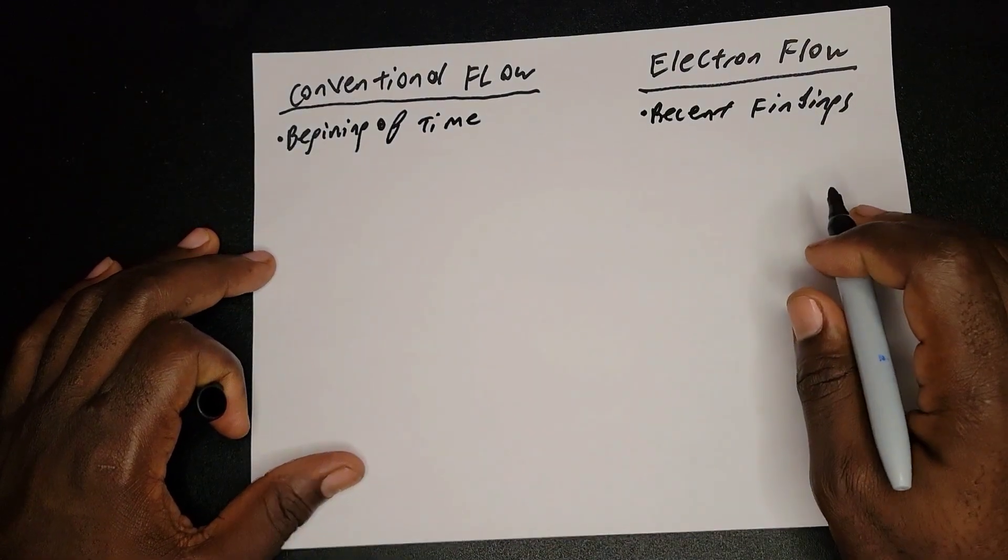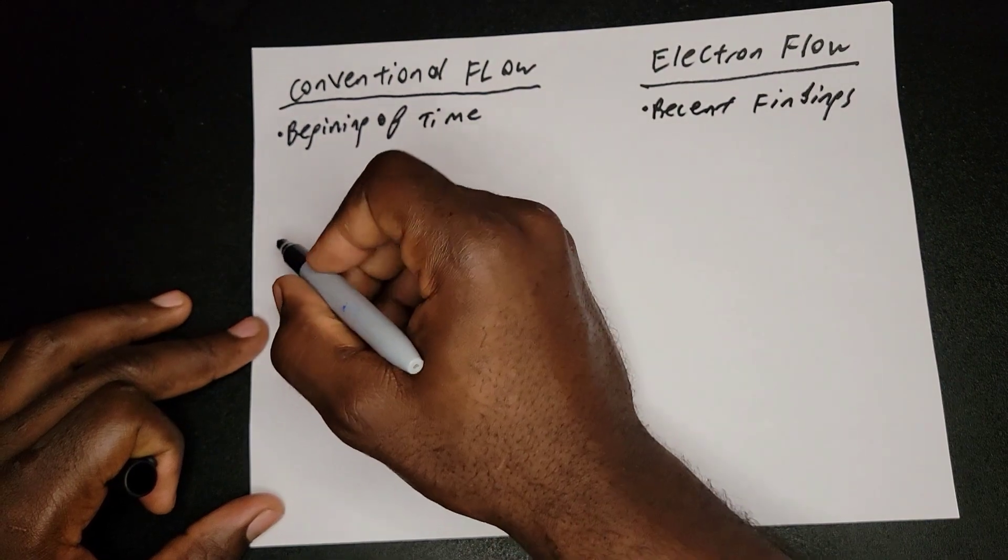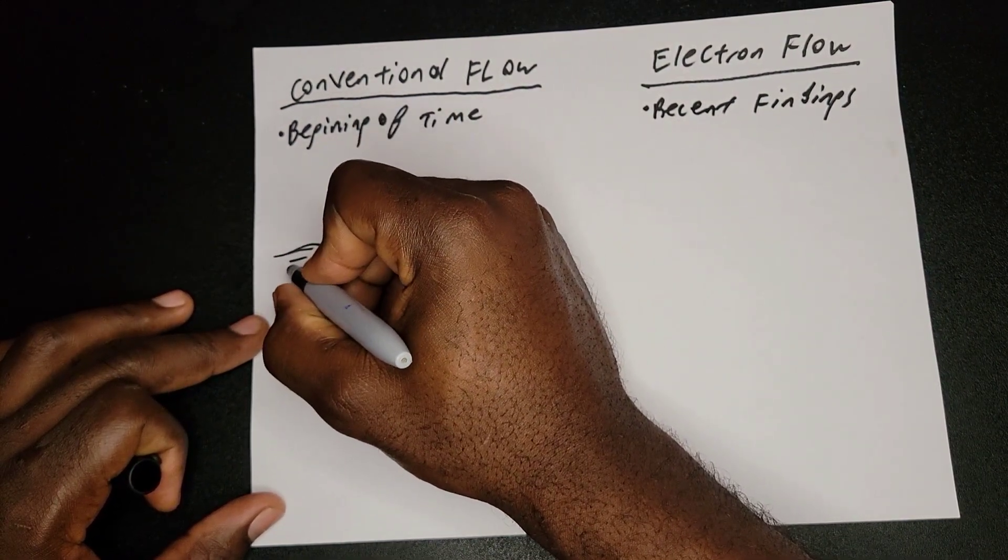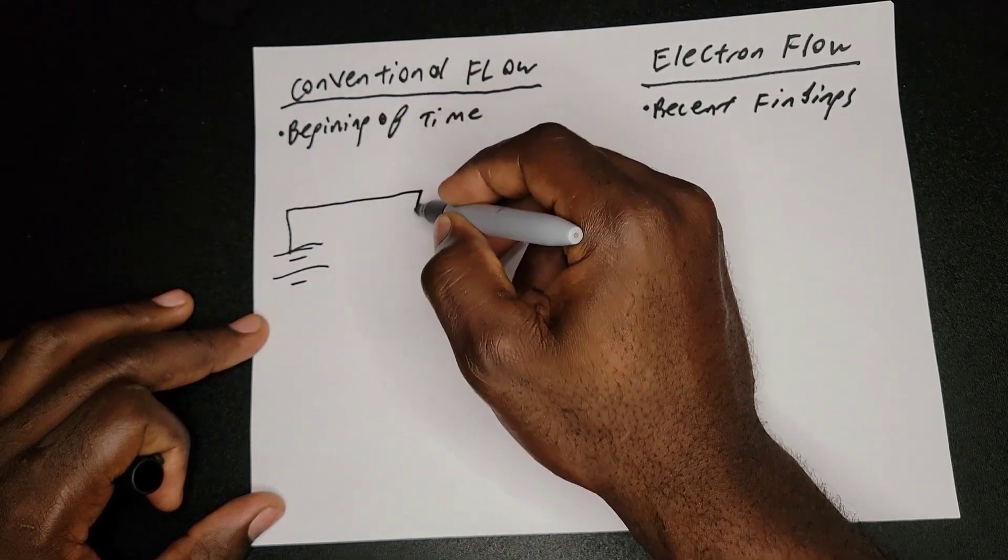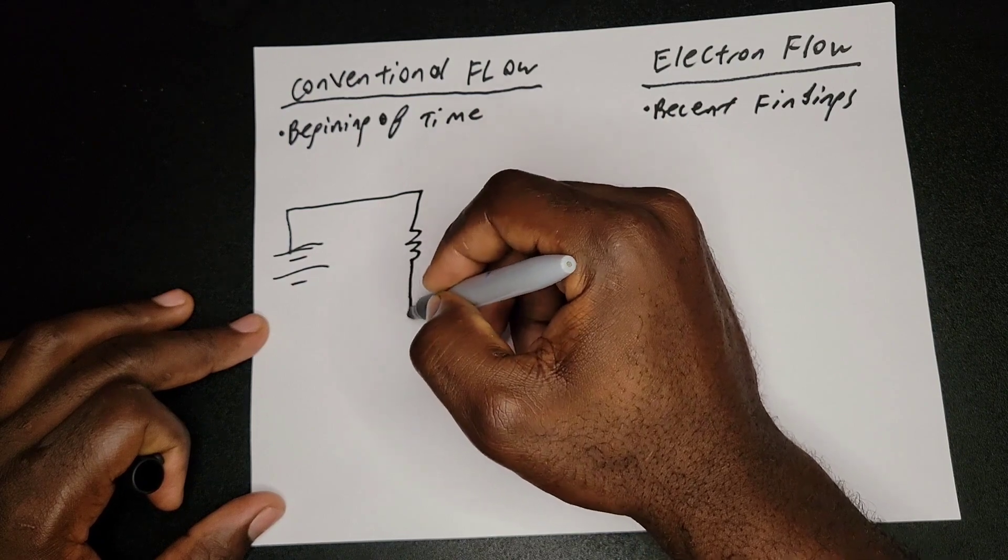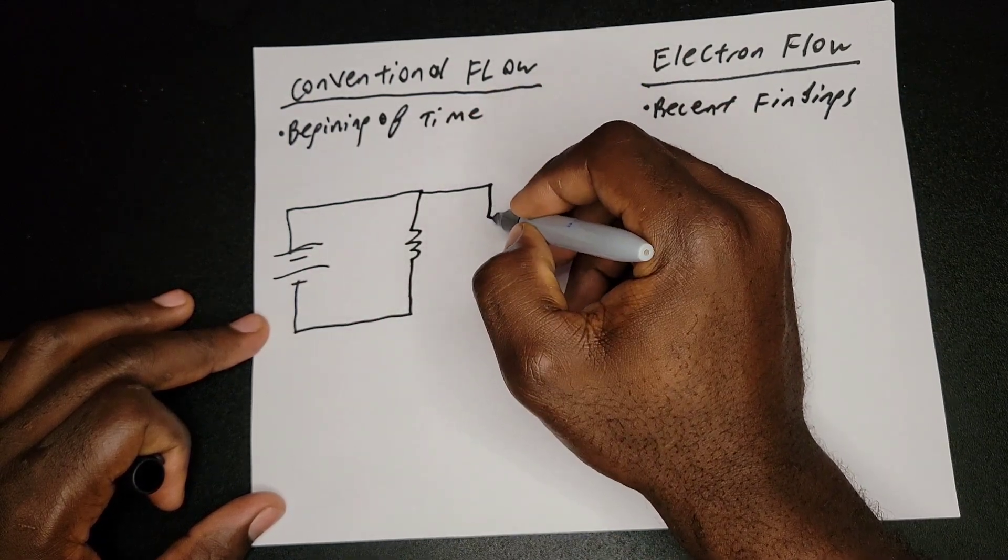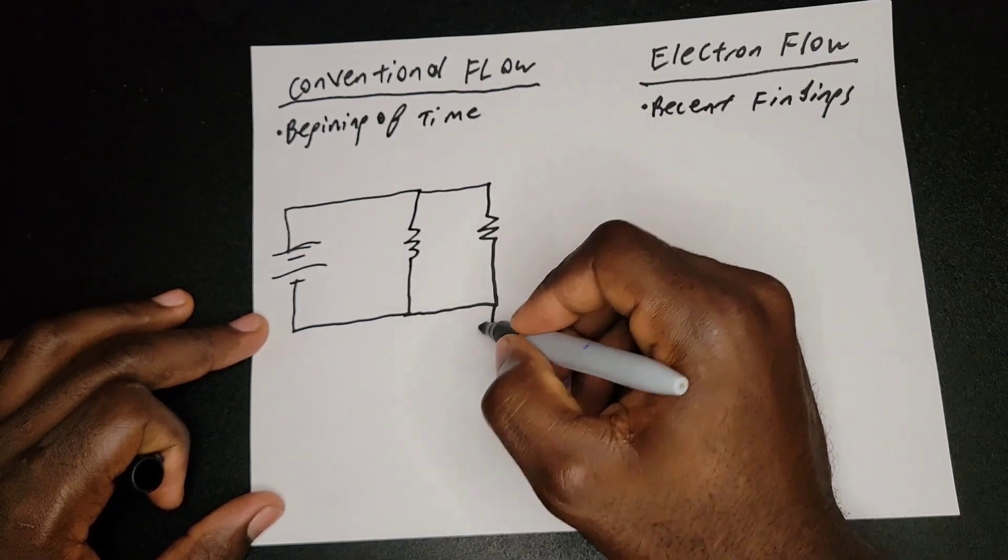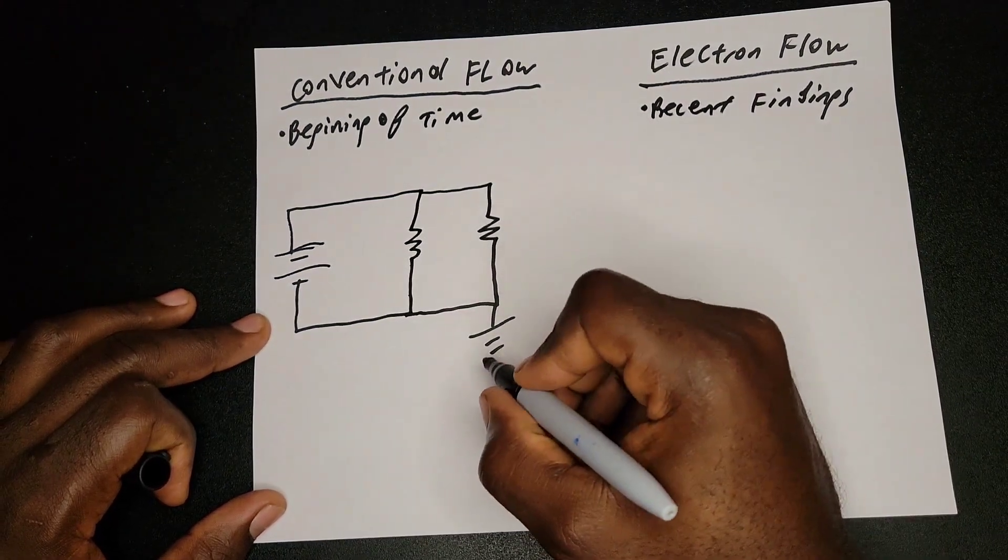So what does conventional flow state? This is my simple circuit. Let me draw a simple DC circuit. My resistor, let me add another resistor. Well, it's not really a simple circuit since I have more than one resistor, but I still refer to it as a resistor. And this is my ground.